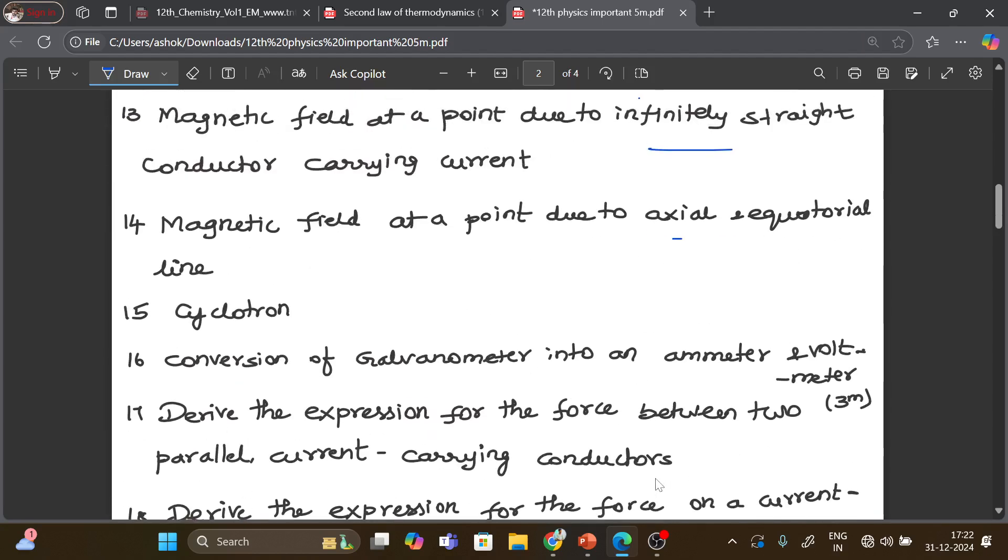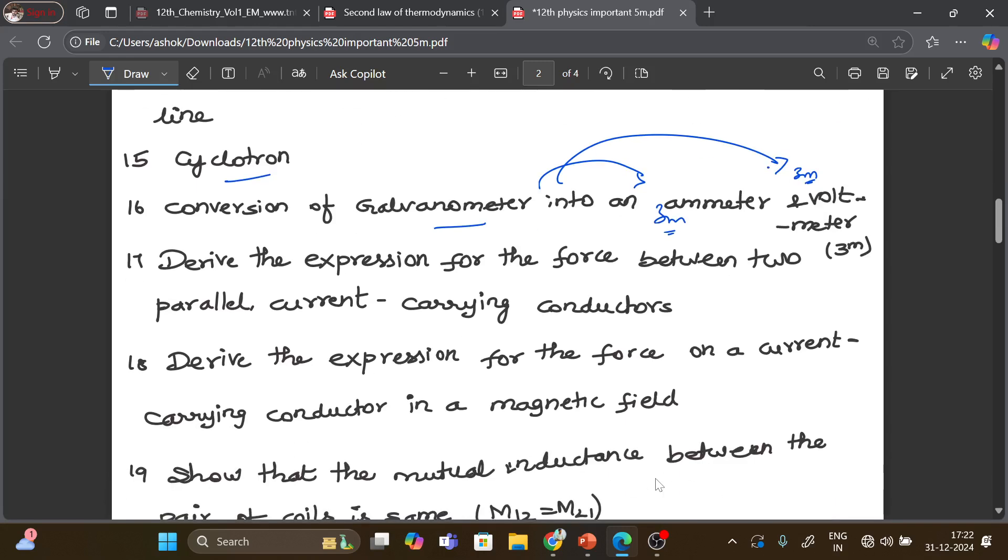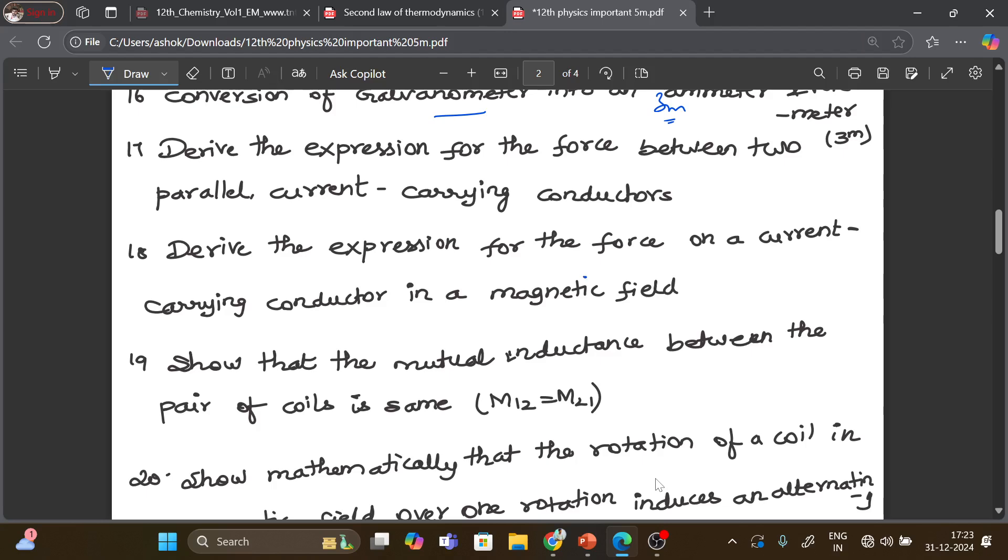Magnetic field at a point due to axial and equatorial line. Cyclotron. Galvanometer into ammeter and voltmeter, this is 3 mark. Galvanometer into ammeter is 3 mark, galvanometer into voltmeter is 3 mark. Then expression for force between two parallel current carrying conductors. Expression for force on current carrying conductor in magnetic field.